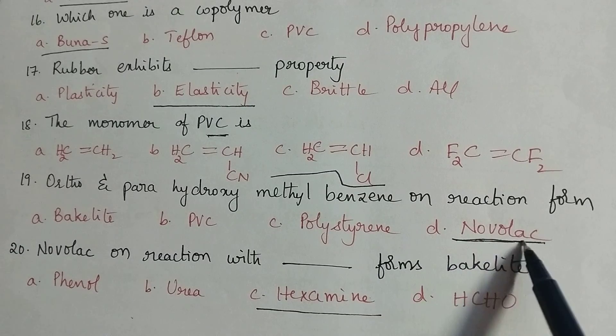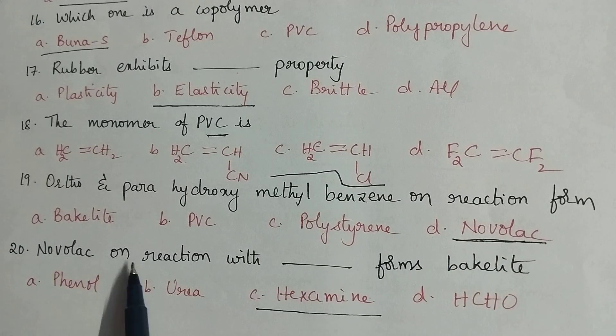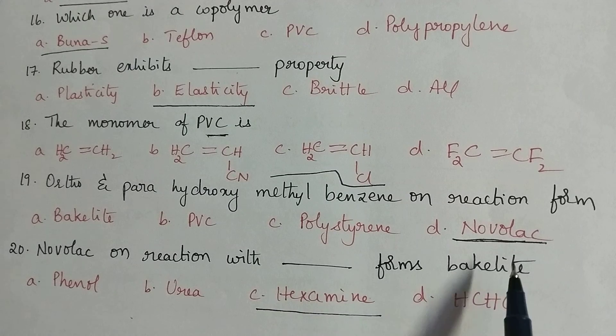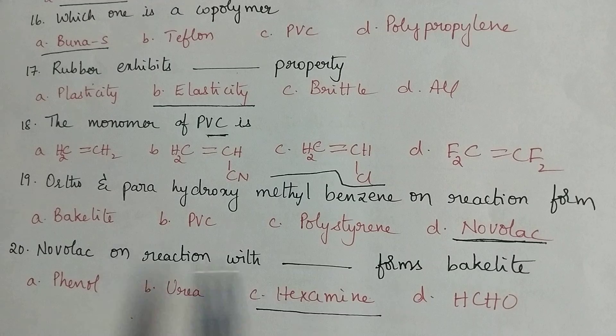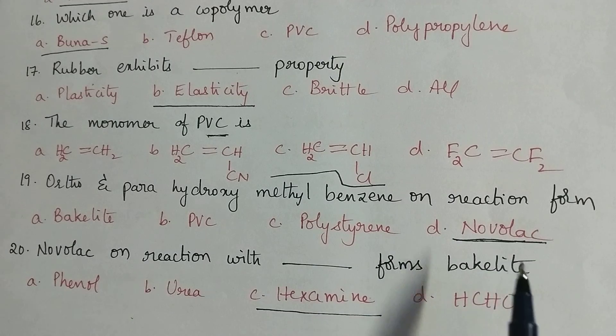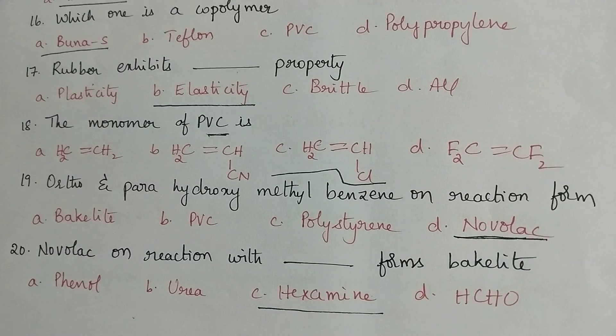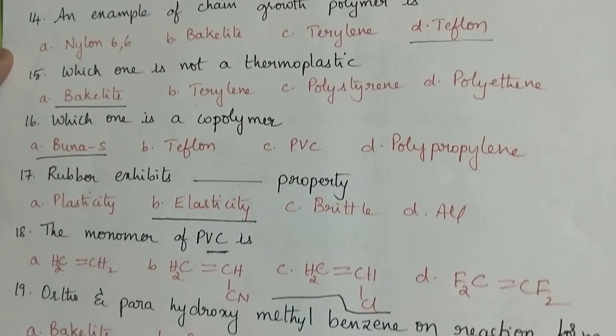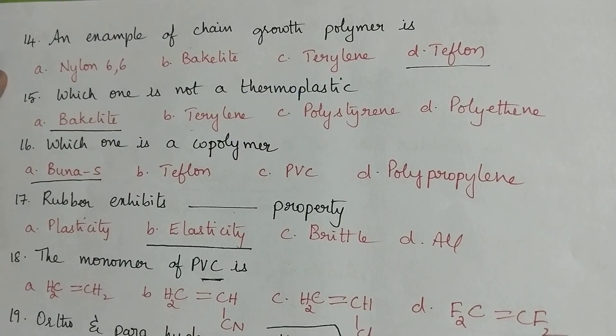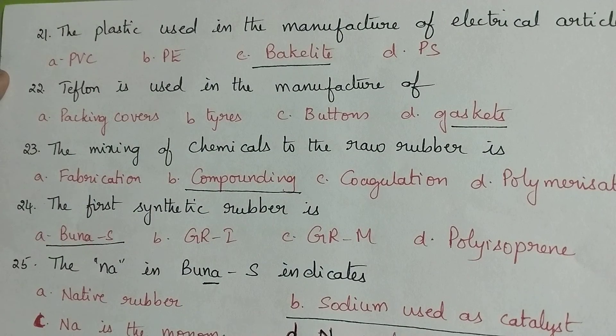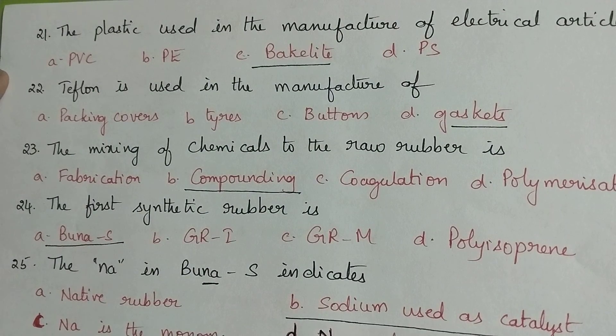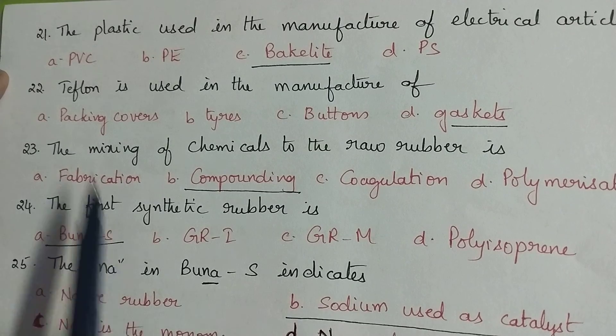Novolac on reaction with dash forms bakelite. In the third step novolac undergoes polymerization which results in the formation of bakelite in the presence of hexamine as the catalyst. During the formation of bakelite, hexamine is used as the catalyst.